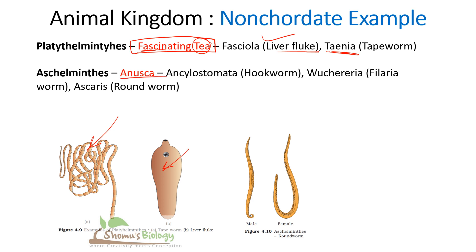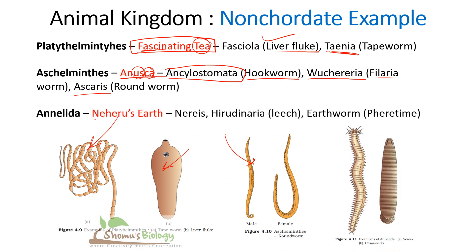For Aschelminths or Nemathelminths, remember 'Anushka' spelled A-N-U-S-C-A: AN for Ancylostoma (hookworm); U-S for Wuchereria (filaria worm); and CA for Ascaris at the end. For Annelida, remember 'Nehru's Earth': Nehris for Nereis; Hiru for Hirudinaria (leech); and Earth for Earthworm, which is Pheretima.